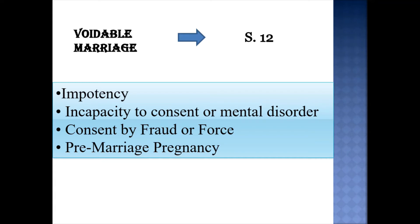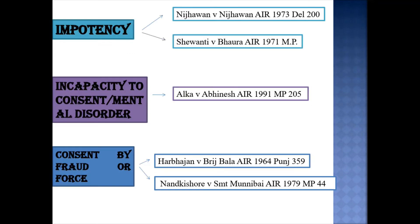Coming to the grounds of Section 12, there are basically four grounds for a marriage to be declared voidable. First is impotency. Second is incapacity to consent or mental disorder. Third is consent by fraud or force. And fourth is pre-marriage pregnancy. The first ground, impotency, is given in Section 12, clause 1(a): that the marriage has not been consummated owing to the impotency of the respondent.